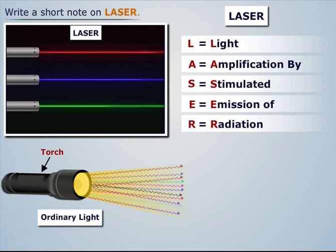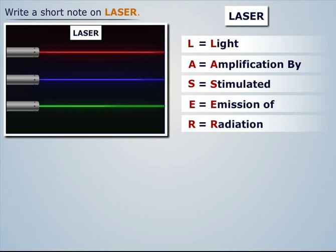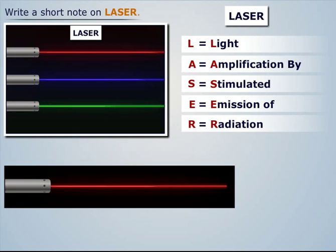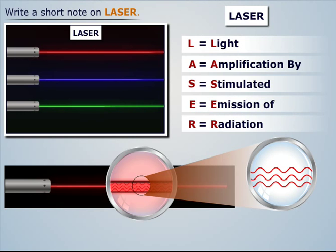Now let's observe a laser beam. We see that it travels parallel without much divergence. This is because this beam is monochromatic - that is, it is made up of a single color. Also, these light waves are coherent, which means that they have the same wavelength and are in phase with each other.